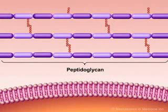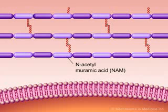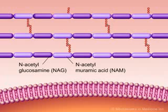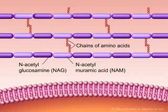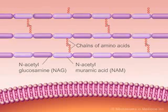Peptidoglycan, the most important component of the cell wall, is a polymer made of N-acetylmuramic acid alternating with N-acetylglucosamine, which are cross-linked by chains of four amino acids. The function of the bacterial cell wall is to maintain the characteristic shape of the organism and to prevent the bacterium from bursting when fluid flows into the organism by osmosis.